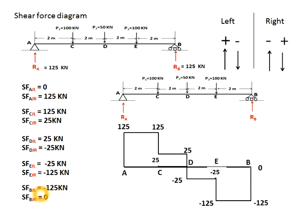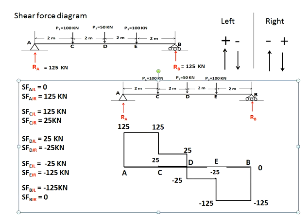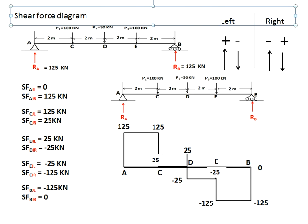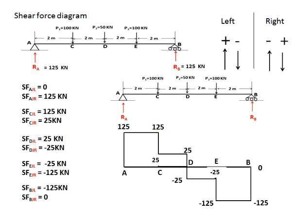Now at each point I have two values, making it easy to draw the diagram. The datum line is AB. Starting at A: 0 and 125; at C: 125 and 25; at D: 25 and −25; at E: −25 and 125; at B: −125 and 0. Joining these points gives the shear force diagram, with positive and negative regions clearly shown.